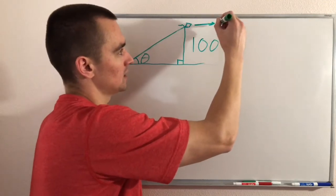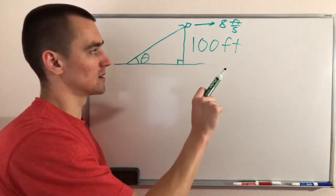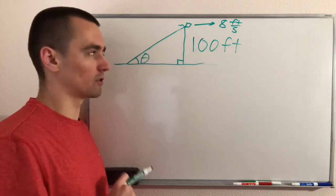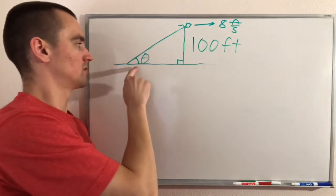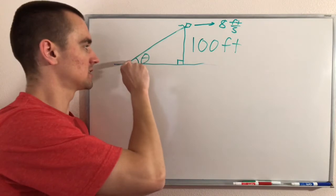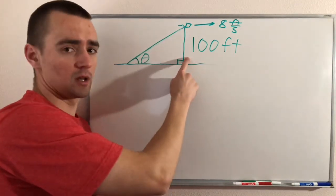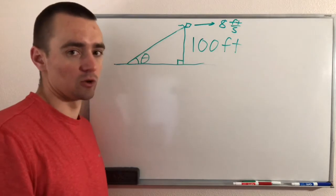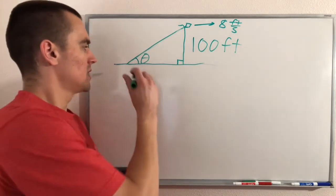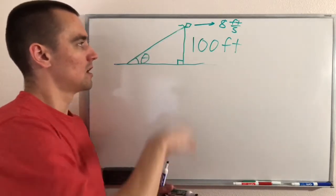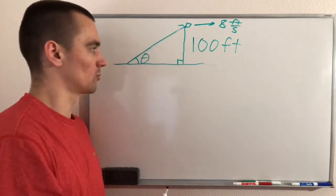We also know the kite is 100 feet above the ground, so that side is always going to be 100 feet. The kite is moving horizontally at 8 feet per second, so since it's moving horizontally, it will always remain 100 feet above the ground. The top point of the triangle is moving horizontally, so this angle is going to be decreasing and the string is going to be getting longer.